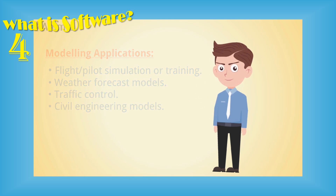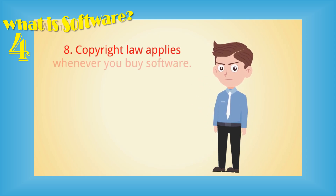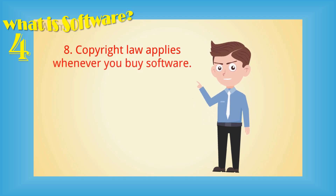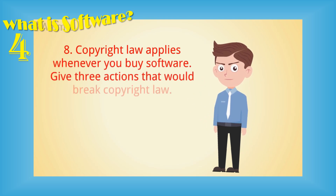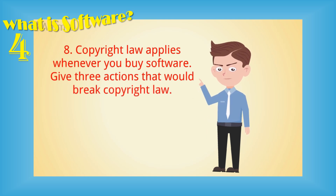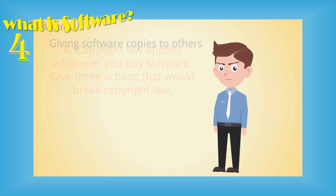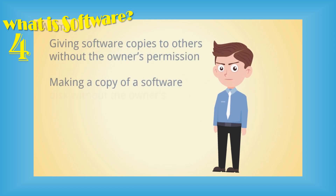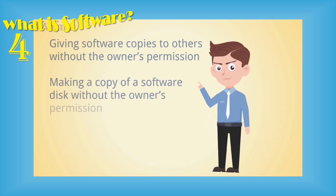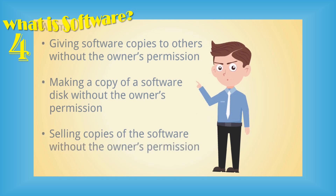Question number eight: copyright law applies whenever you buy software. Give three actions that would break copyright law. Answer: giving software copies to others without the owner's permission, making a copy of a software disk without the owner's permission, and selling copies of the software without the owner's permission.